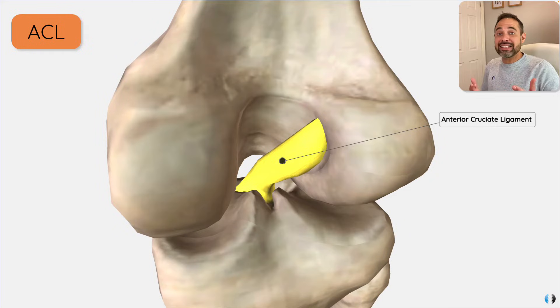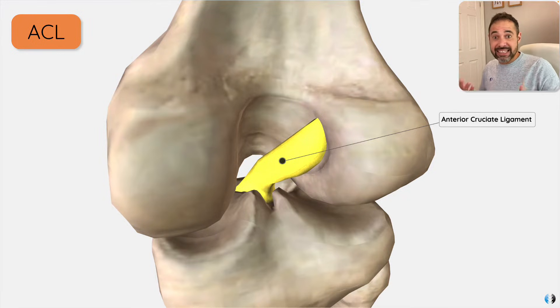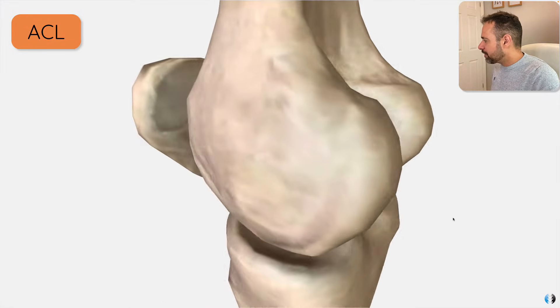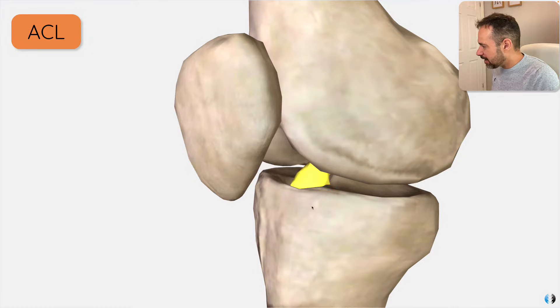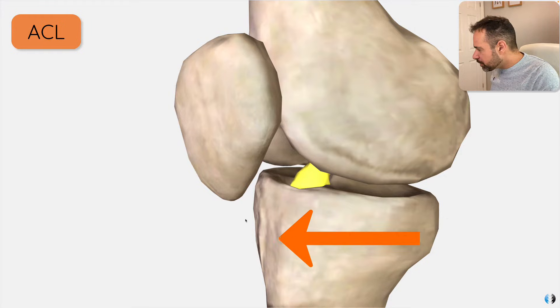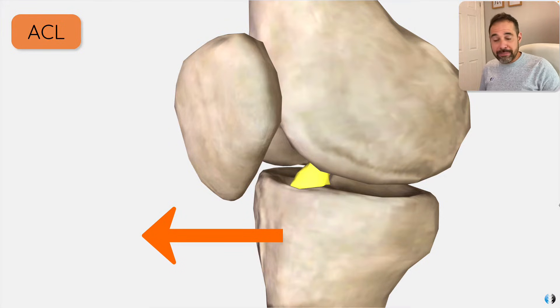The first key thing to understanding the difference between these two injuries is to understand the anatomy. Let's start off by diving into our 3D anatomy model. Starting with the ACL — the anterior cruciate ligament. This is a ligament with its anterior attachment to the anterior tibia.